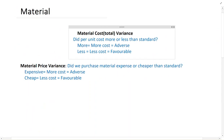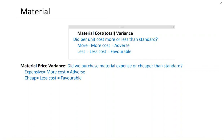Material variance is divided into three parts. One is the main part, which is then divided into two sub-parts. The main part is the material cost variance, or material total variance. We want to see whether we have incurred more or less cost per unit. If we have incurred more per unit, we have adverse; if we have incurred less cost per unit, we have favorable.